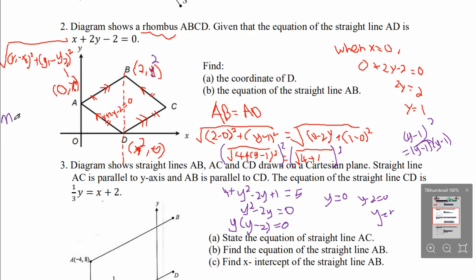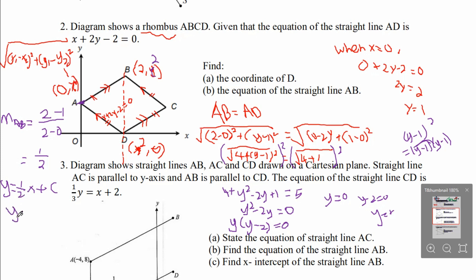Now find the gradient of AB. Using A (0, 1) and B (2, 2): gradient equals to (2 minus 1) over (2 minus 0) equals to 1 over 2. Putting into the general equation: Y equals to 1/2 X plus C. The Y-intercept is the Y coordinate of A, which is 1. So the final equation is Y equals to 1/2 X plus 1.